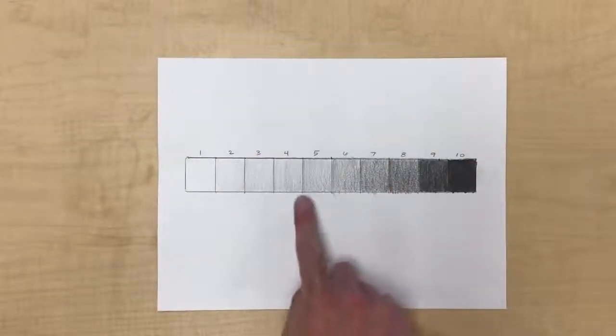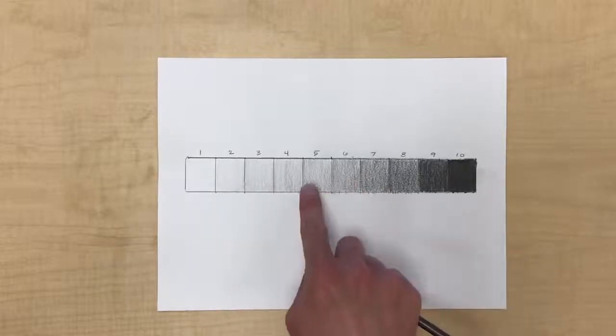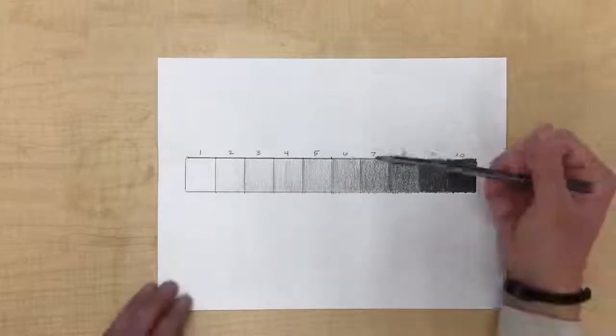Now you see I have a value scale. I went back and I adjusted a few of them. I can work on these a little bit more. What you're trying to do is just keep it from being the same value from box to box.